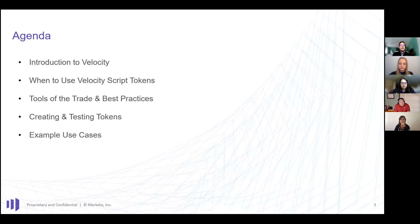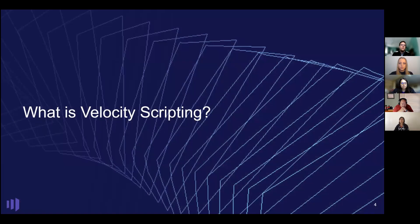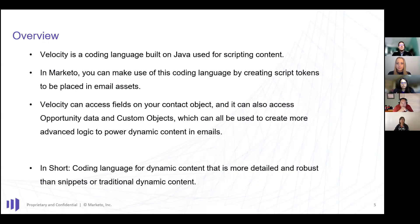We're going to talk about what Velocity is, when you should be using it — there are a million ways to get things done in Marketo — and kind of talk through some of the things I consider: tools of the trade, best practices, how to create and test your tokens, and then walk through a couple of use cases.